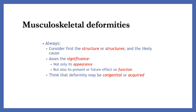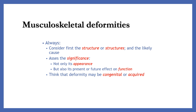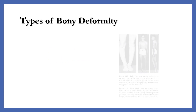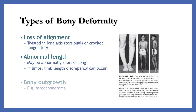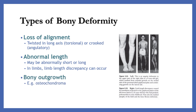Musculoskeletal deformities. Always consider first the structure or structures and the likely cause. Assess the significance not only of its appearance but also its present or future effect on function. Types of bony deformity include loss of alignment, twisted in long axis or torsional, angulatory, abnormal length either abnormally short or long, and in limbs, limb length discrepancy can occur.